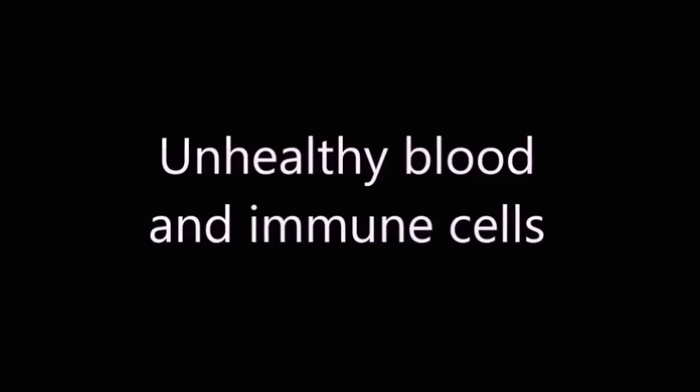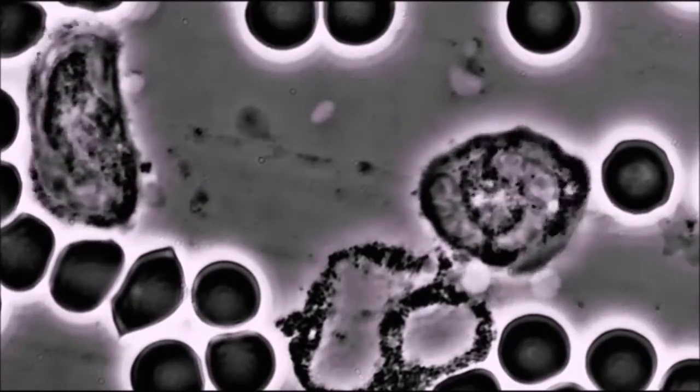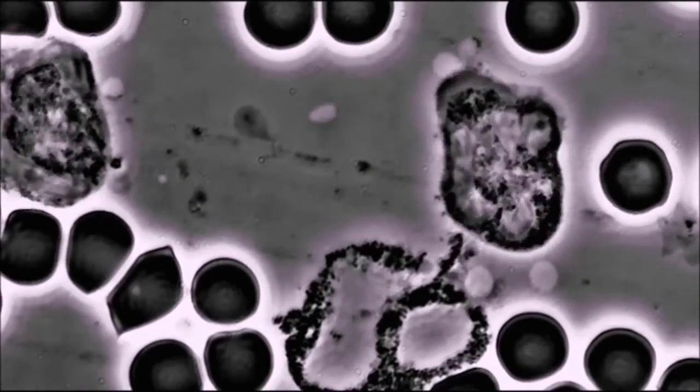The unhealthier blood looks messier, with fungus and trash floating around between the cells. The red blood cells will also often be more pointy and can be stuck together.